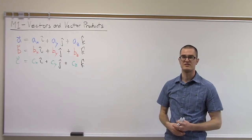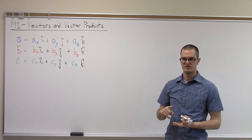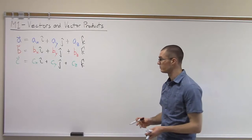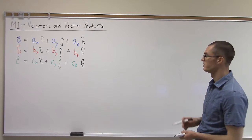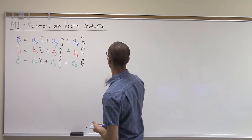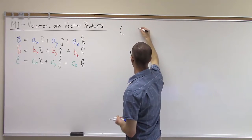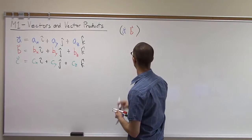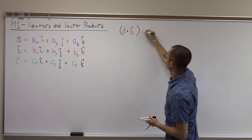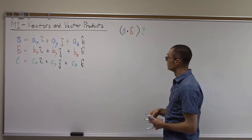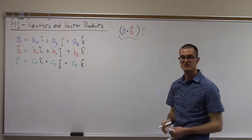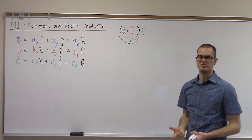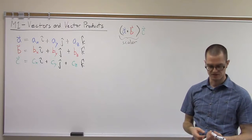Vector triple products involve operations where we're multiplying three vectors together using combinations of scalar multiplication, dot products, and cross products. The first type we'll look at is when we have three vectors a, b, and c, and we take a dot b — the dot product between a and b — and multiply by the third vector c. We know that the dot product of any two vectors is just going to be a scalar, so this type of triple product actually just reduces to scalar multiplication, the first type of product we looked at.